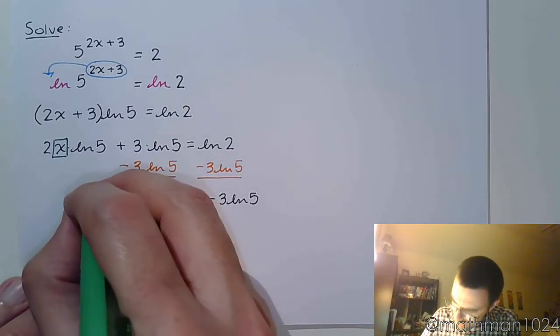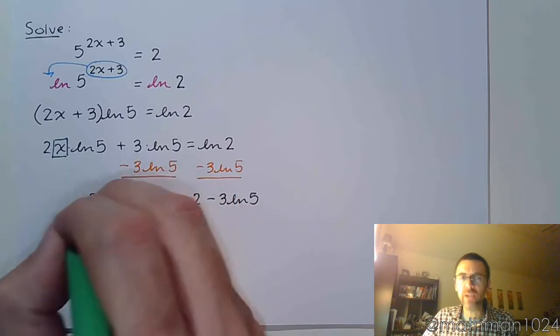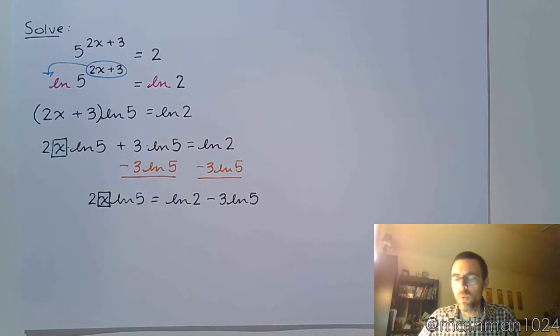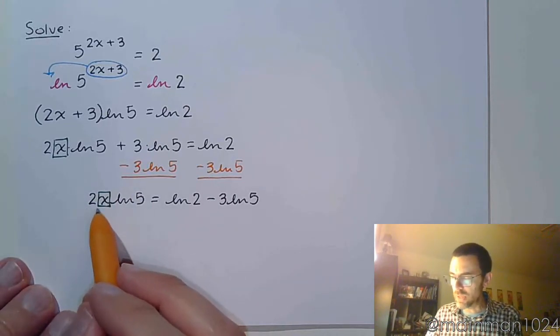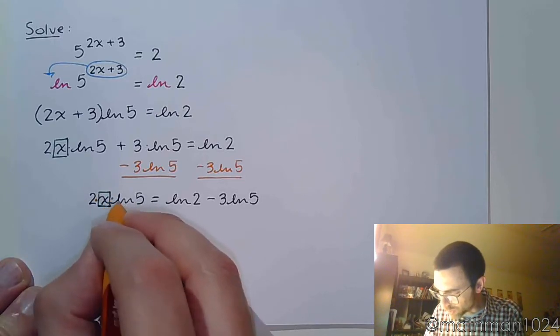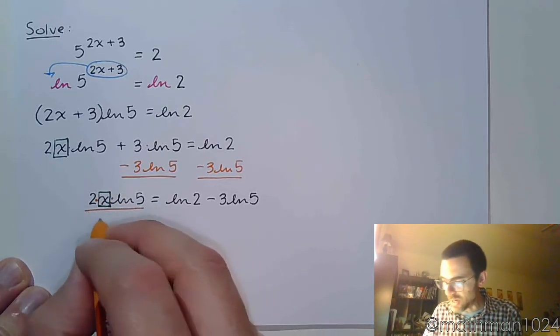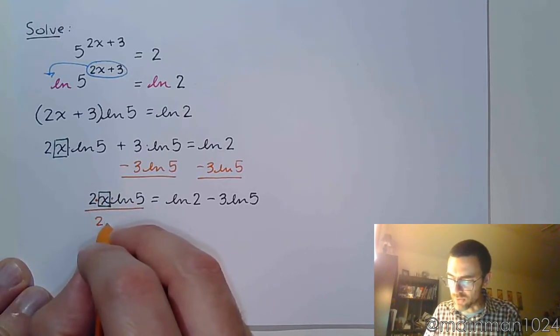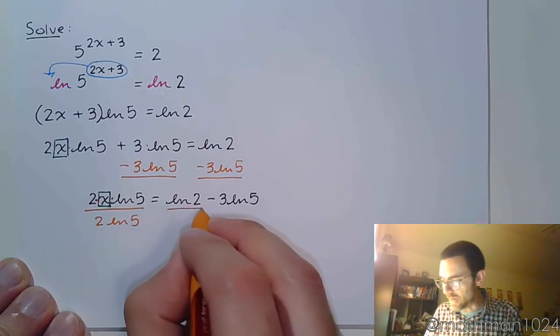And then, how do we get x by itself? Well, there are two things that are keeping x from being by itself. And those are the factors 2 and the natural log of 5. So since everything here is connected through multiplication, I can just divide both sides by those two factors.